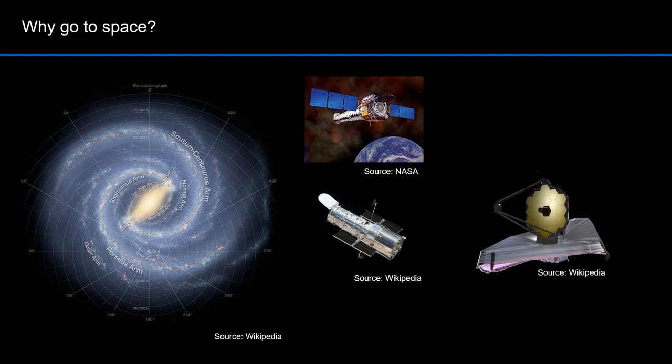The new James Webb Space Telescope will operate mainly in the infrared spectrum. It will be able to see the distant edge of the universe within 400 million of a 13.8 billion life of the universe.